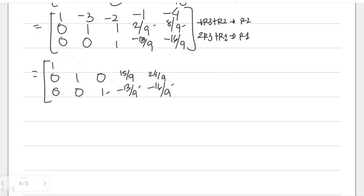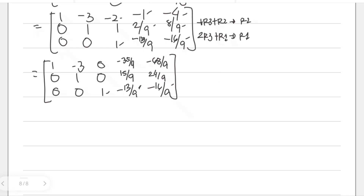For new row one using 2 times row 3 plus row 1: the third column entry becomes 2 times 1 plus negative 2, giving 0. For the fourth column: 2 times negative 13/9 is negative 26/9; adding negative 1 in ninths is negative 9/9, so negative 26/9 minus 9/9 gives negative 35/9. For the fifth column: 2 times negative 16/9 is negative 32/9; negative 4 in ninths is negative 36/9; negative 32 plus negative 36 gives negative 68/9.